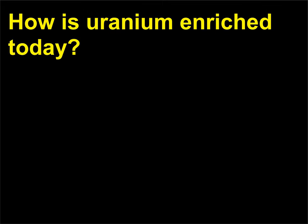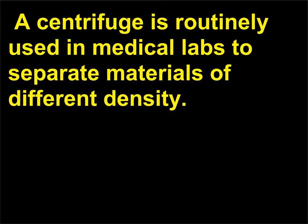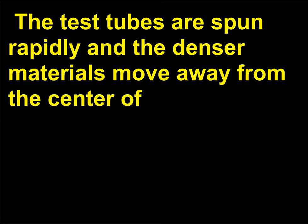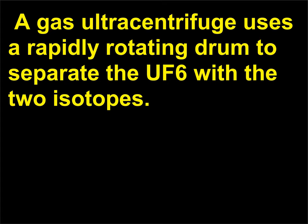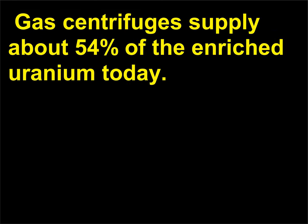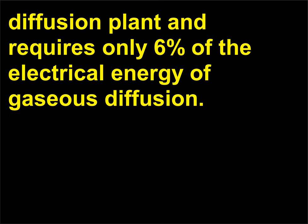How is uranium enriched today? Today, ultracentrifuges are used for uranium enrichment. A centrifuge is routinely used in medical labs to separate materials of different density — the test tubes are spun rapidly and denser materials move away from the center of rotation. A gas ultracentrifuge uses a rapidly rotating drum to separate UF6 with the two isotopes. Gas centrifuges supply about 54% of the enriched uranium today, and each centrifuge is a more effective separator than a stage in a gaseous diffusion plant, requiring only 6% of the electrical energy of gaseous diffusion.